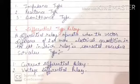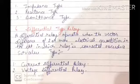Under fault conditions, the currents entering and leaving are different, so the current differential type relay operates. In the voltage differential type, two transformers are used, connected with the relay such that the induced EMFs are in opposition under normal condition. Under fault condition, the primaries carry different currents, due to which the induced EMFs no longer remain in opposition and the relay operates.